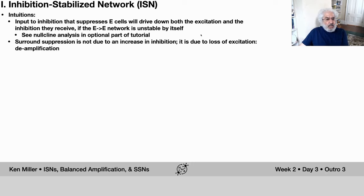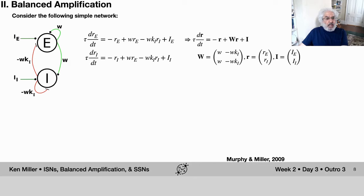So what kind of amplification is it? It's what we call balanced amplification, and that's the second topic. Consider a simple network with an excitatory population and an inhibitory population making connections to themselves and to each other. We assume a particularly simple form of the connections: the two excitatory projections are identical and the two inhibitory projections are identical.